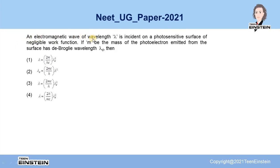The problem states that an electromagnetic wave of wavelength λ is incident on a photosensitive surface of negligible work function. If m is the mass of the photoelectron emitted from the surface, and it has de Broglie wavelength λ_d, then which among these four options will be the correct one?